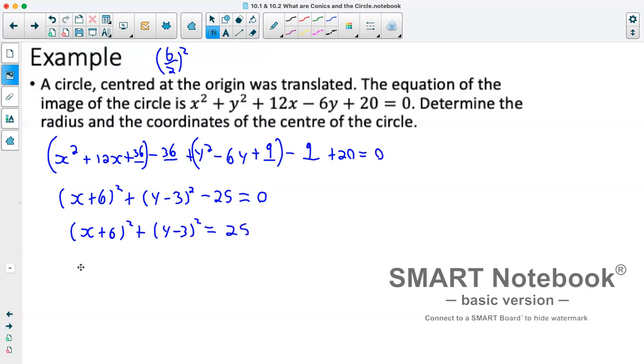Now we get a radius from this. So our radius is equal to the square root of 25, which is just going to be 5. And our center is at negative 6 comma 3.